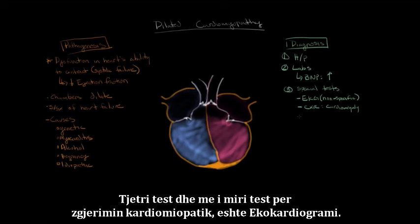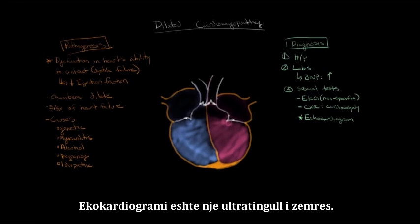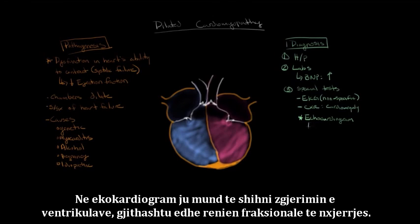The best test for dilated cardiomyopathy is an echocardiogram — an ultrasound of the heart. On an echocardiogram, you can see the dilation of the chambers as well as the decreased ejection fraction.